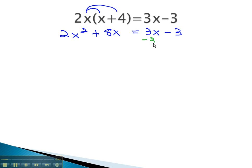We can do this by subtracting 3x and adding 3 to both sides. This will give us 2x squared plus 5x plus 3 equals zero.